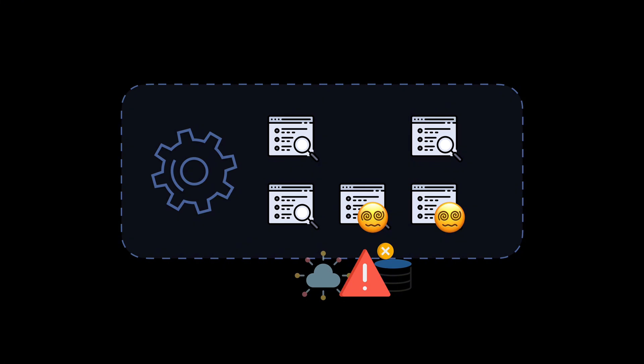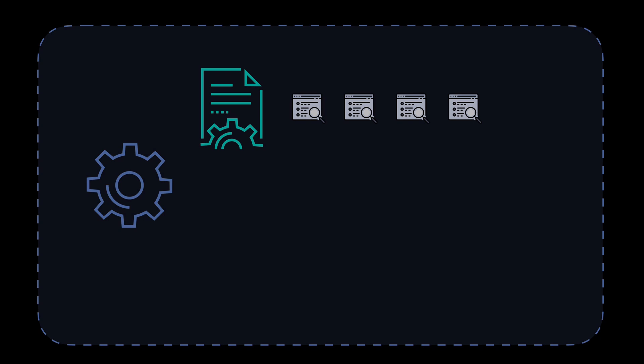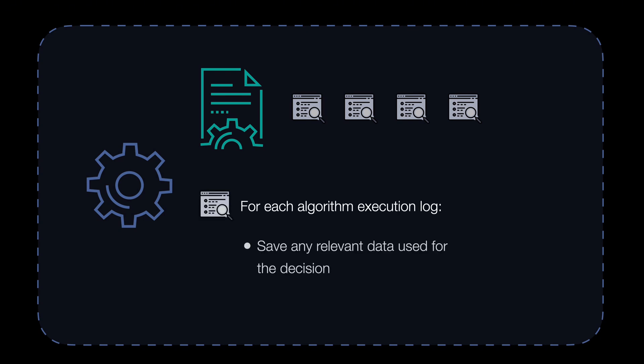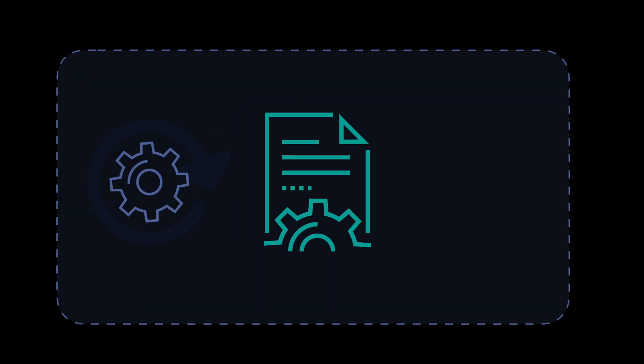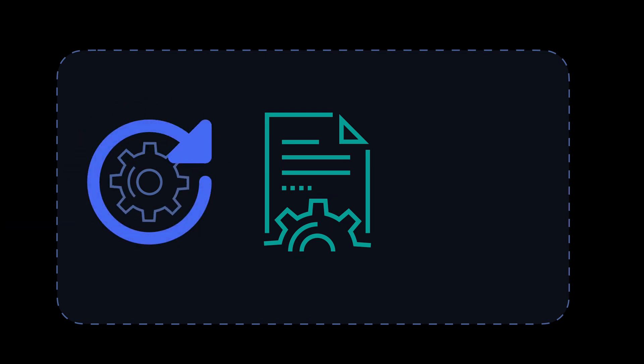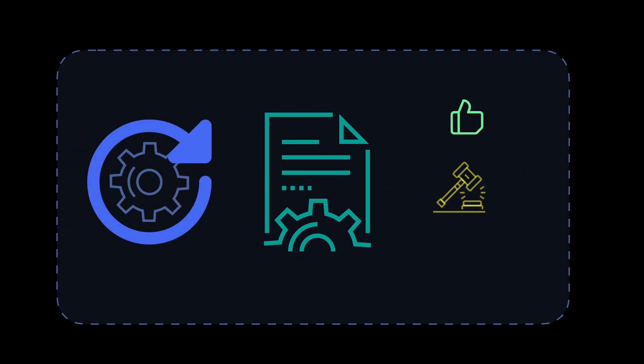With these considerations, for each score evaluation run, we want to log which algorithms were executed at the time. And for each algorithm log, we want to save any relevant data used for the decision. By reviewing these logs, we should be able to re-execute the algorithm and obtain the same resulting score that was calculated at the time of the execution.